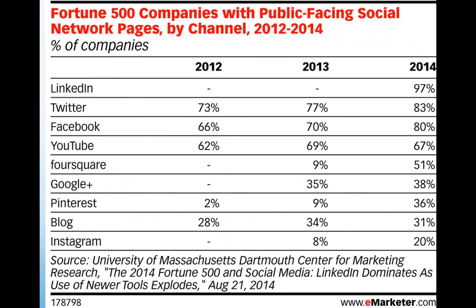If we go to Fortune 500 companies, LinkedIn is number one with 97% of Fortune 500 companies reporting a company page. Facebook is at 80% with a fan page. Twitter is also very popular, but unfortunately we don't have time to cover it — it's almost another session in itself. We'll be looking specifically at LinkedIn and Facebook because companies are actually there, and let's see what kind of information we can mine.